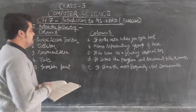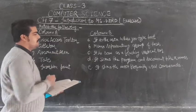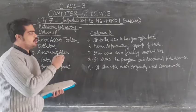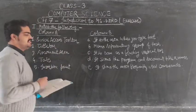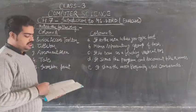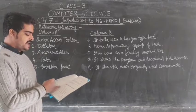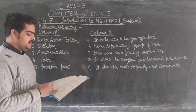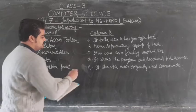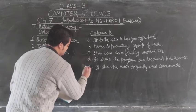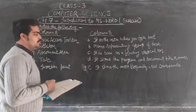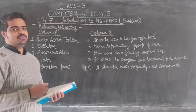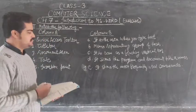We have to match column A to column B. The first one is quick access toolbar, and it will match with option E. It shows the most frequently used commands.